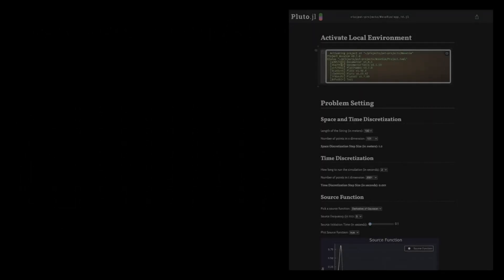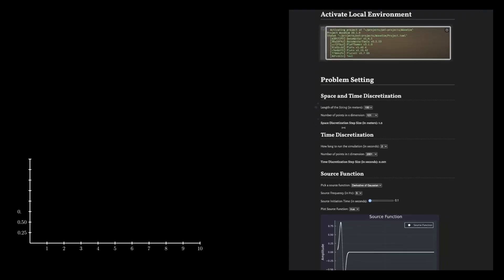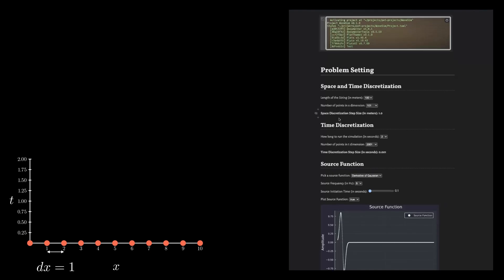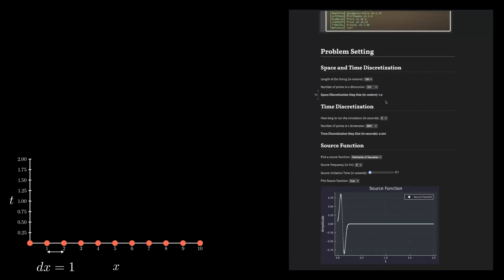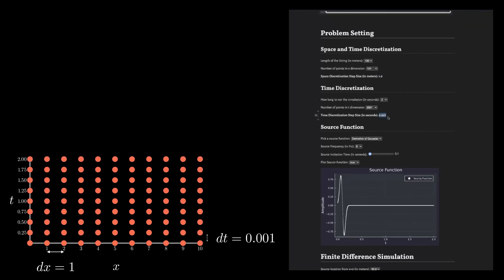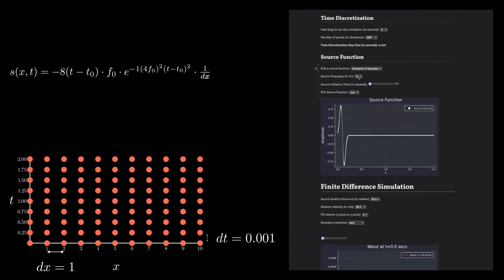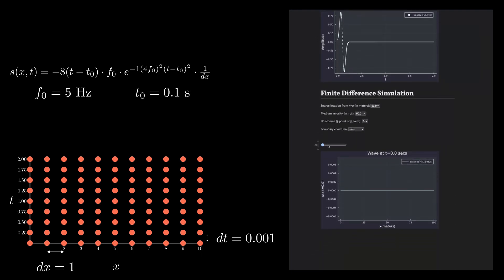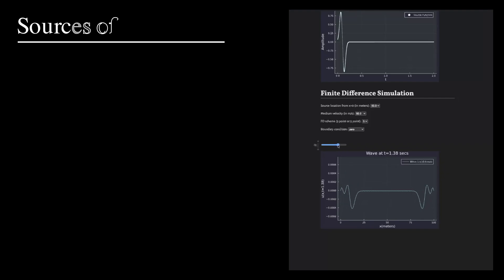I also wrote a simple interactive notebook where I can simulate the 1D wave equation using different settings. Keeping the length of string fixed at 100 meters, I set the number of points in x dimension to 201. This dictates the step size in spatial dimension. I ran the simulation for 2 seconds and the step size in temporal domain was 0.001. Using derivative of a Gaussian with dominant frequency of 5Hz as the source function, I positioned it right in the middle. If I plot the solution at different time steps, you can see that the wave started to disintegrate. Something was off here. The final result was not quite accurate.